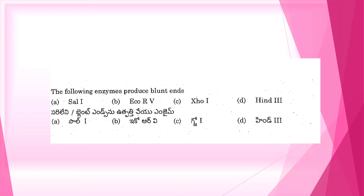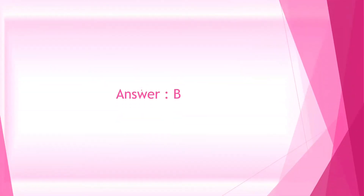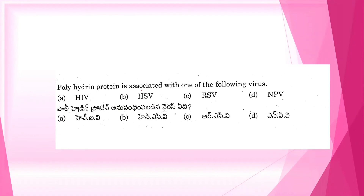Next question. Which of the following enzymes produces blunt ends? A. SAL1. B. ECO-R5. C. XO1. D. Hind3. Again a memory based question. The correct option is B, that is ECO-R5, which will generate blunt ends.